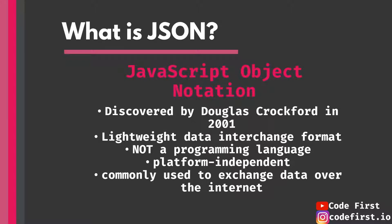JSON is a lightweight data interchange format. On the web, between client and server, data is being exchanged as textual files. Humans read text as free-flowing sentences, but machines need a specific format to understand the data content of these files — they need to understand how each piece of data relates to the others. That's why we need data interchange formats. Previously, XML existed from the rise of the web and is still extensively used today.